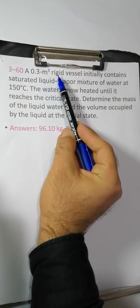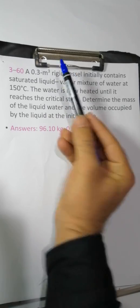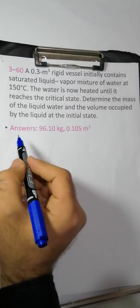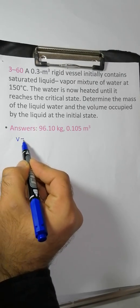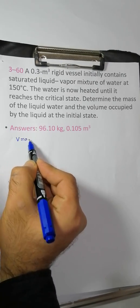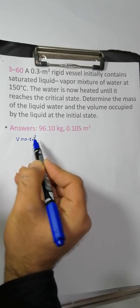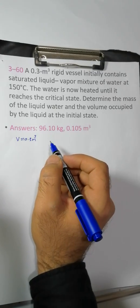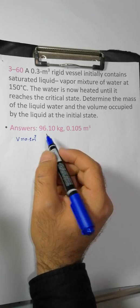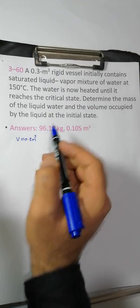A 0.7 m³ rigid vessel initially contains a saturated liquid-water mixture.